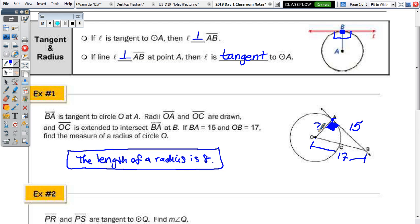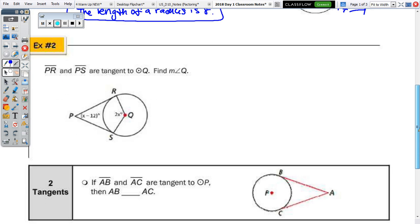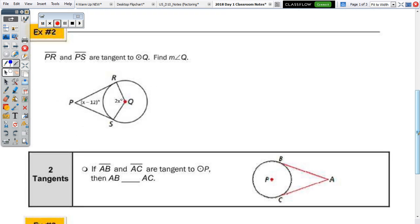Number two, in the circle we have PR and PS tangent to circle Q. Find the measure of angle Q. So, PR and PS are drawn from the same external point, P.